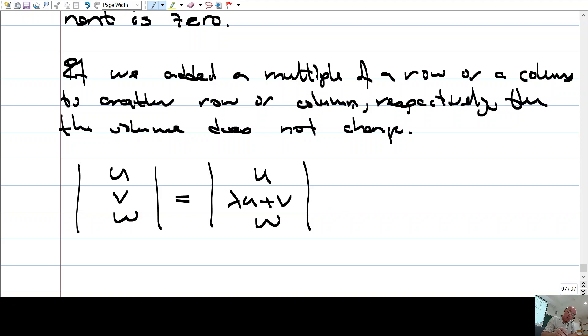Ya da bunlar kalım olsaydı, şöyle olsaydı, birinci kalım, ikinci kalım, üçüncü kalım. Ben işte şey yapıyorum. Diyelim ki ikinciyi, üçüncüye ekliyorum. U V lambda V plus W. Tamam mı? İkincinin lambda katını üçüncüye ekliyorum. O zaman yine volume değişmez.